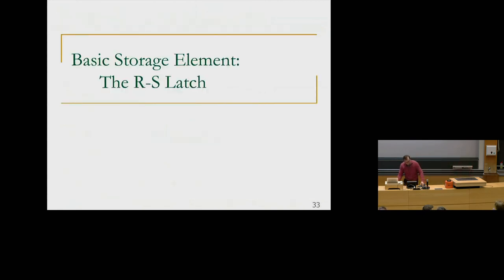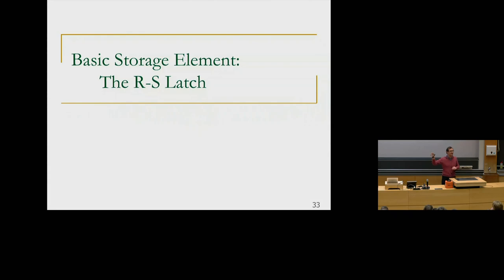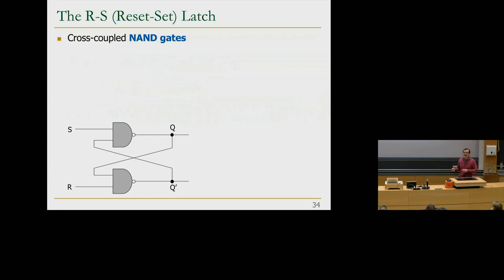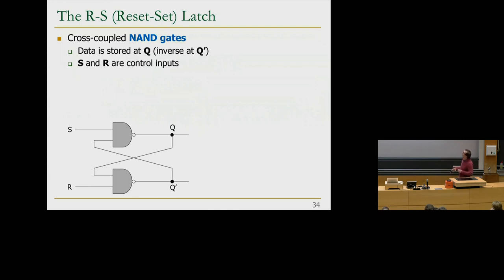Let's start with our basic storage element, the RS latch or SR latch, built from cross-coupled NAND gates. Data is stored at Q, with its inverse at Q-bar. S and R are control inputs — set and reset. In the ideal state, both S and R are held at one. If you want to set Q to one, you drive S to zero and R to one, making Q become one.